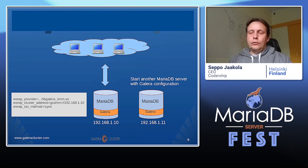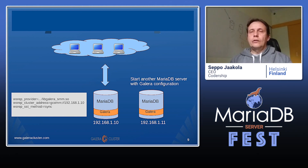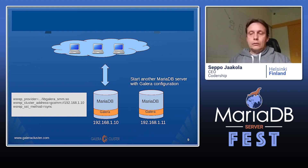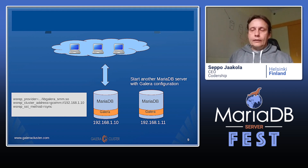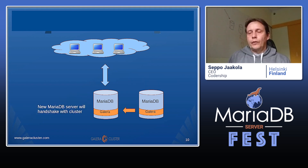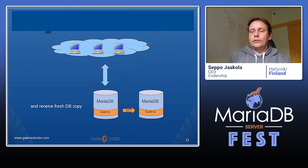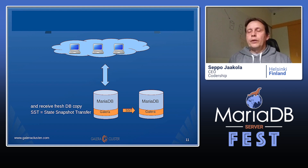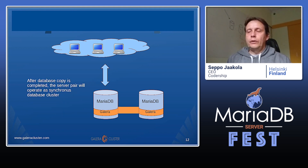The third configuration variable is vsrep_sst_method. It tells the method by which a new node joining the cluster can get a copy of the database so that it has the same data content as the rest of the cluster. In this example the method is rsync, so the joining node will get an rsynced copy of the data directory — the files present in the first node are just copied over the network to the joining node. The cluster will handshake with the joining node, send a fresh copy of the database via rsync, and when the copying is complete the node will be an active member in the cluster.